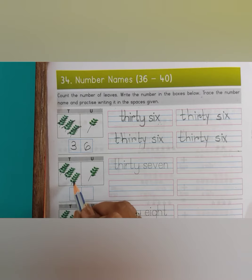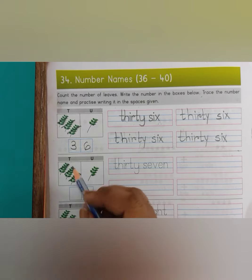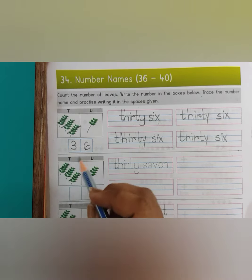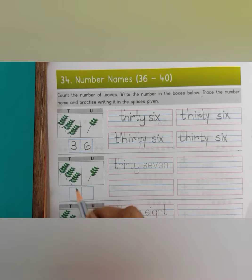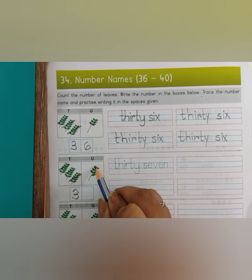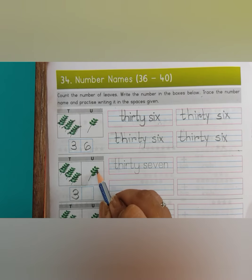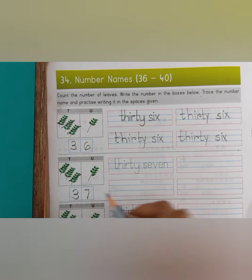This is the tens group. So here, how many groups are there? Tens: 1, 2, 3. So here we have to count tens: 1, 2, 3, and units: 1, 2, 3, 4, 5, 6, 7. So units we will write 7.